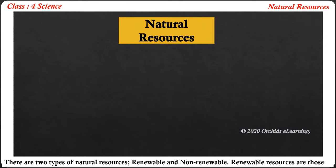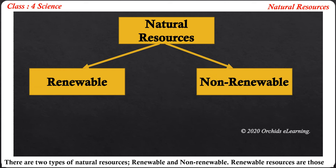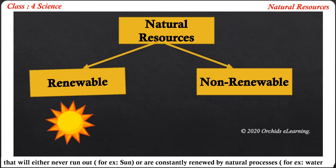There are two types of natural resources: renewable and non-renewable. Renewable resources are those that will either never run out — for example, the sun —